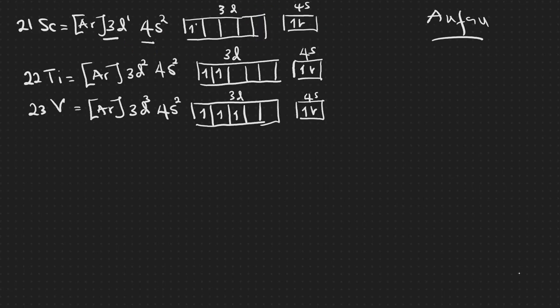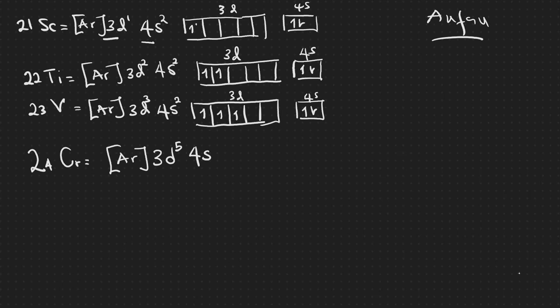Now, chromium (number 24) is one of the elements we are focusing on. Chromium's configuration is [Ar] 3d⁵ 4s¹. You will notice something here: the 4s orbital is supposed to have two electrons, and 3d is supposed to have four electrons. But something different is happening. Let's draw the orbitals to see what actually occurred.